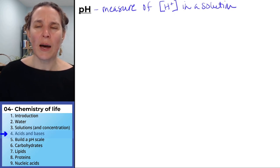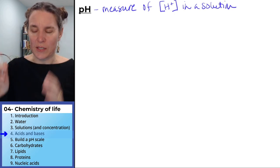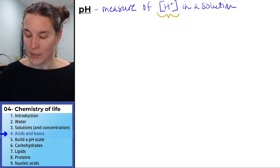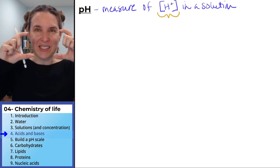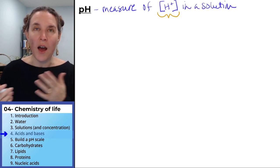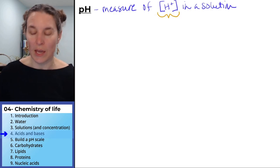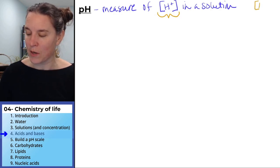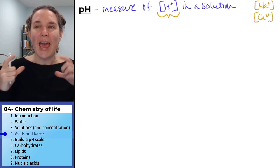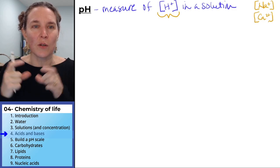Now, a couple things. First of all, I don't know if I've told you this yet, but when you put something in brackets, that can mean concentration of. So I often will abbreviate by saying, let's talk about the concentration of sodium ions in your blood, the concentration of calcium ions in your blood. And I just shorthand it with those little brackets.